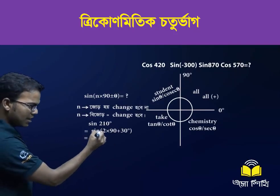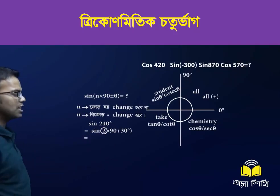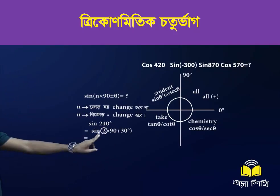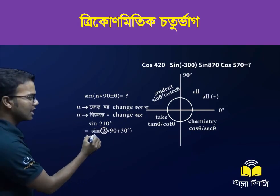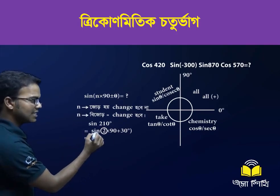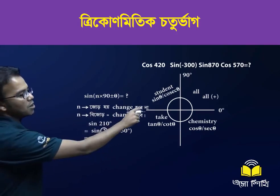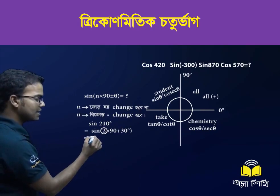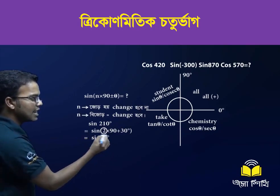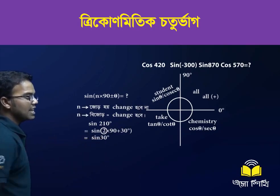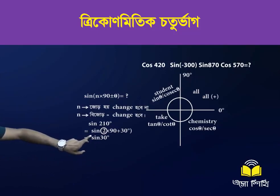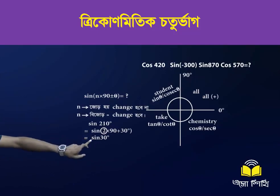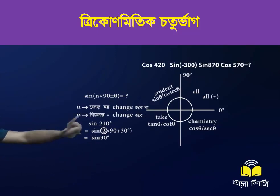Why sin 2? Because 2 is the same as 2, and 2 is the same as 2. So, if you know that you are at 2 to 90 and 30, you will determine whether you are positive or negative, and then you will be clear.